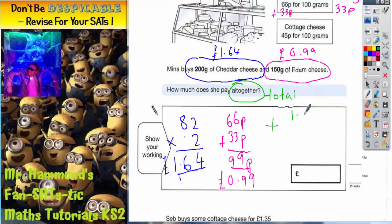It's going to be a column method again, so it's £1.64 add 99 pence, and this will give us our final total. 4 add 9 is 13 - put a 3 in, carry the 1. 1 and 9 is 10, plus 6 is 16 - put a 6 in, carry the 1. 1 plus nothing plus the 1 that I carried is 2. Make sure you don't forget your decimal point. So the final answer is £2.63.